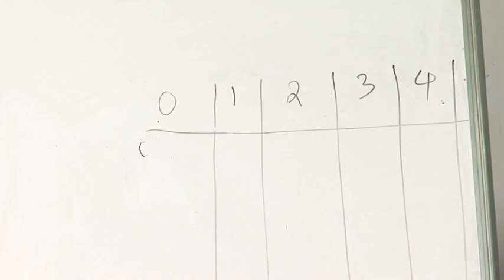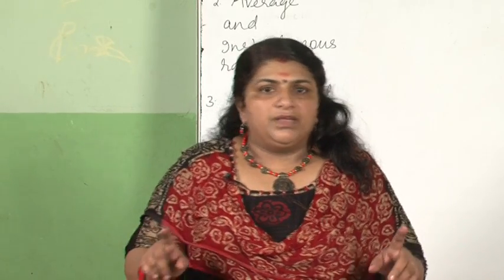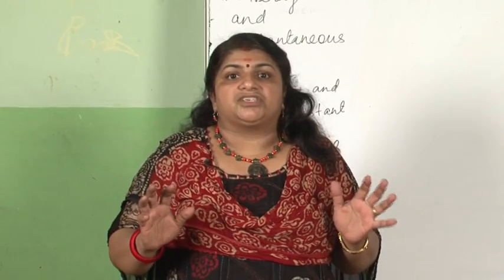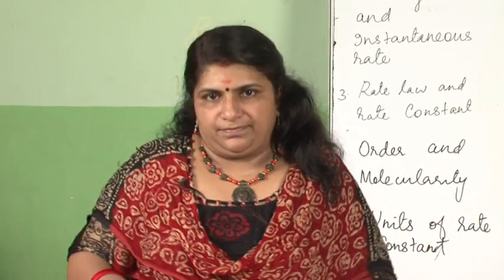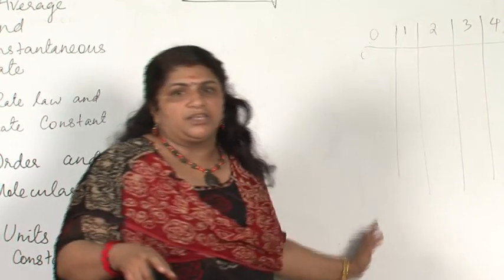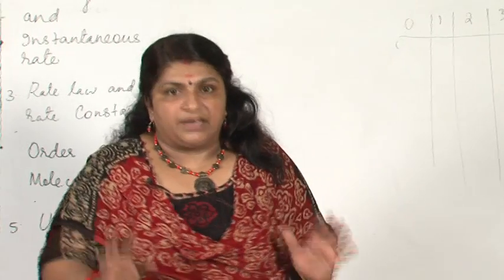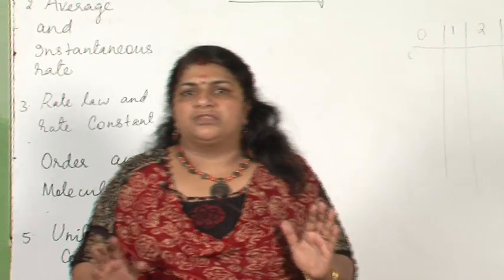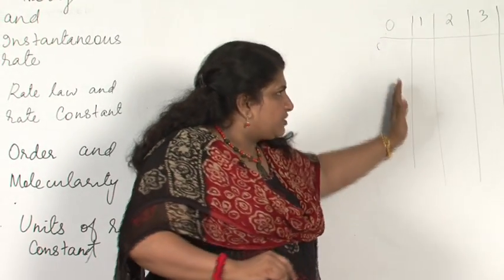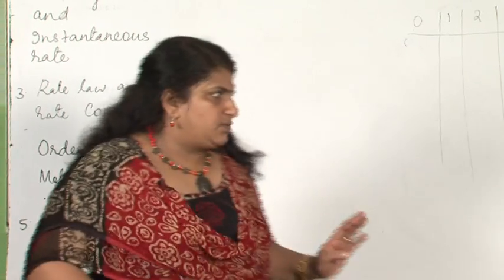Just as students are grouped from highest scorers (group 0) to slow learners (group 4) based on their capacity to learn, chemical reactions are also grouped into various categories known as the order of the reaction. A reaction said to be zero order does not literally mean its order is zero; it means all reactions under zero order follow the same kinetics. Similarly, first order reactions all follow the same kinetics, and second order reactions also all follow the same kinetics.